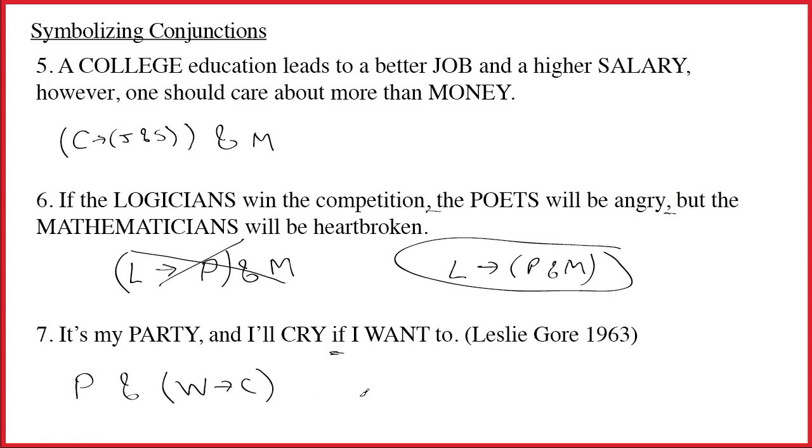However, you know the song. Why is it that she can cry? It seems pretty clear to me that she would say, well, the reason that she can cry is because it's her party and she wants to. So I think if you were actually just listening to the song, you would have to say that this is the appropriate symbolization that goes with the intent of the song. You might say that maybe I haven't written this sentence correctly on the page.